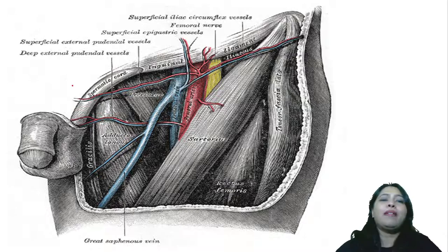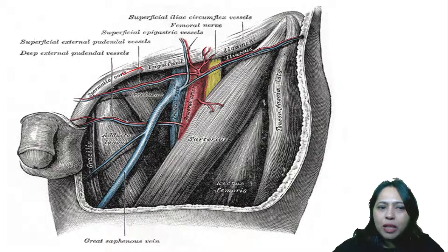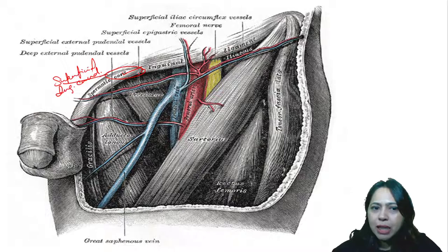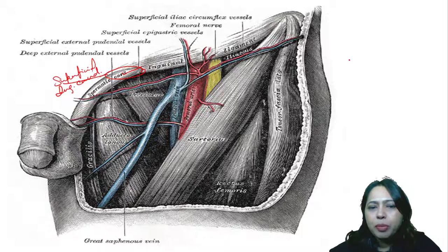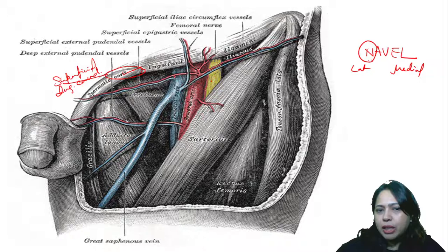Here we have the femoral triangle. It is male because you can see the spermatic cord and the inguinal ligament. This opening here is the superficial inguinal canal. The spermatic cord is the content. Beyond the inguinal ligament, the external iliac is called the femoral artery. The structures can be remembered with the mnemonic NAVEL, going from lateral to medial: Nerve, Artery, Vein, Empty space, then Lymph nodes.